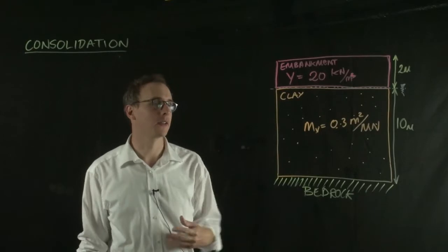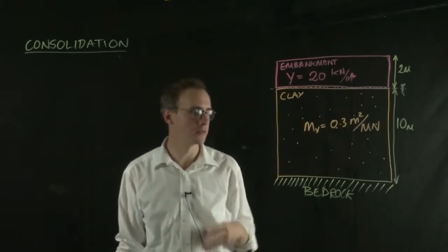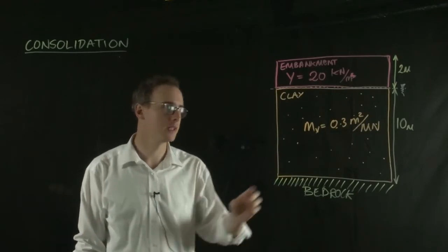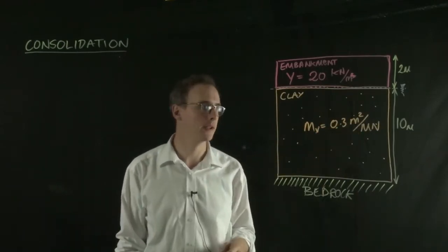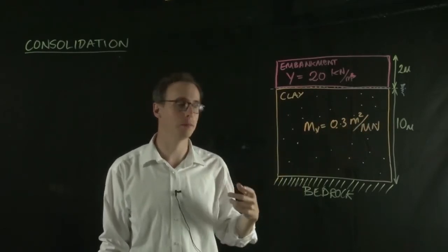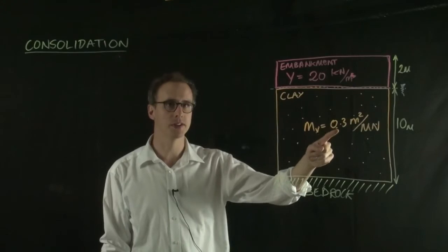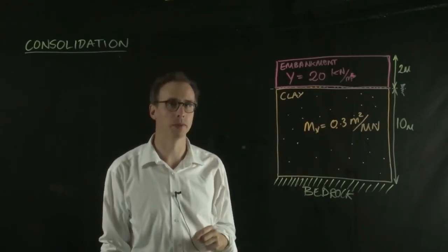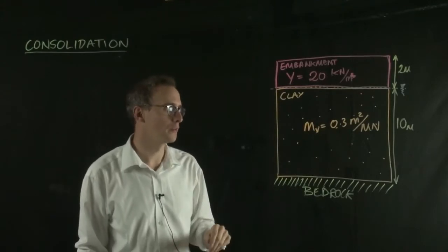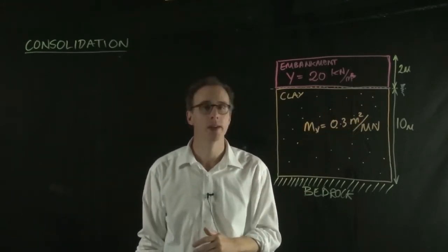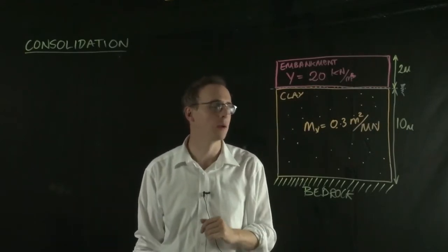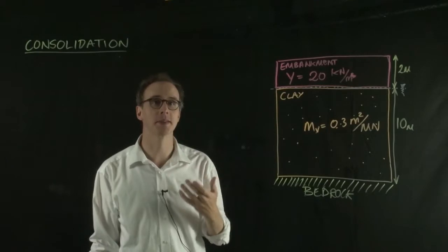Now suppose we have a situation where we have 10 meters of clay. Let's say we know the coefficient of volume compressibility is 0.3 meters squared per meganewton. It's often written in meters squared per meganewton rather than kilonewtons, just to make this number more manageable. We have a clay layer, we know its coefficient of volume compressibility, and it's 10 meters thick. Let's say we have a water table at this surface here, so the clay is fully saturated, just to make things simple.